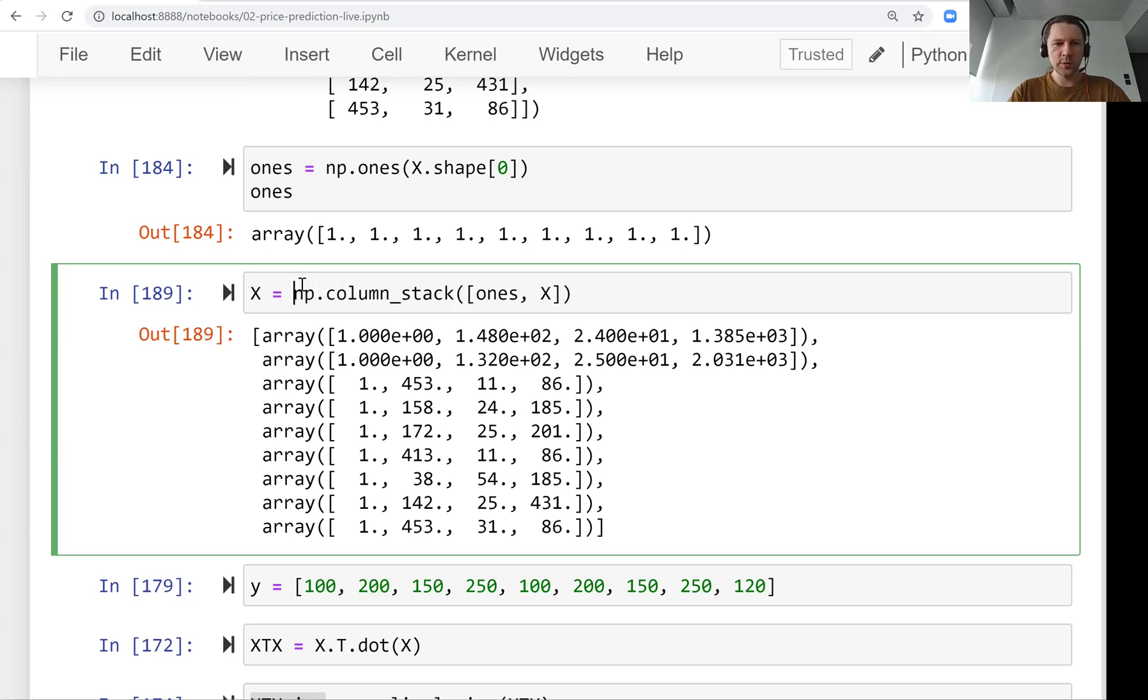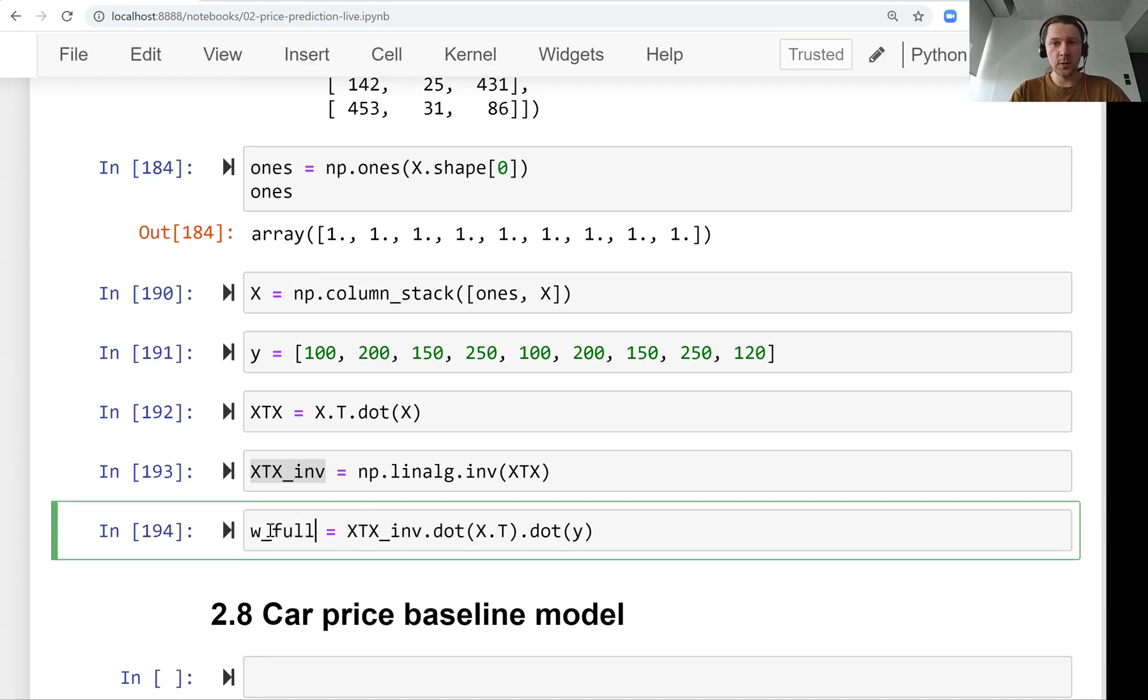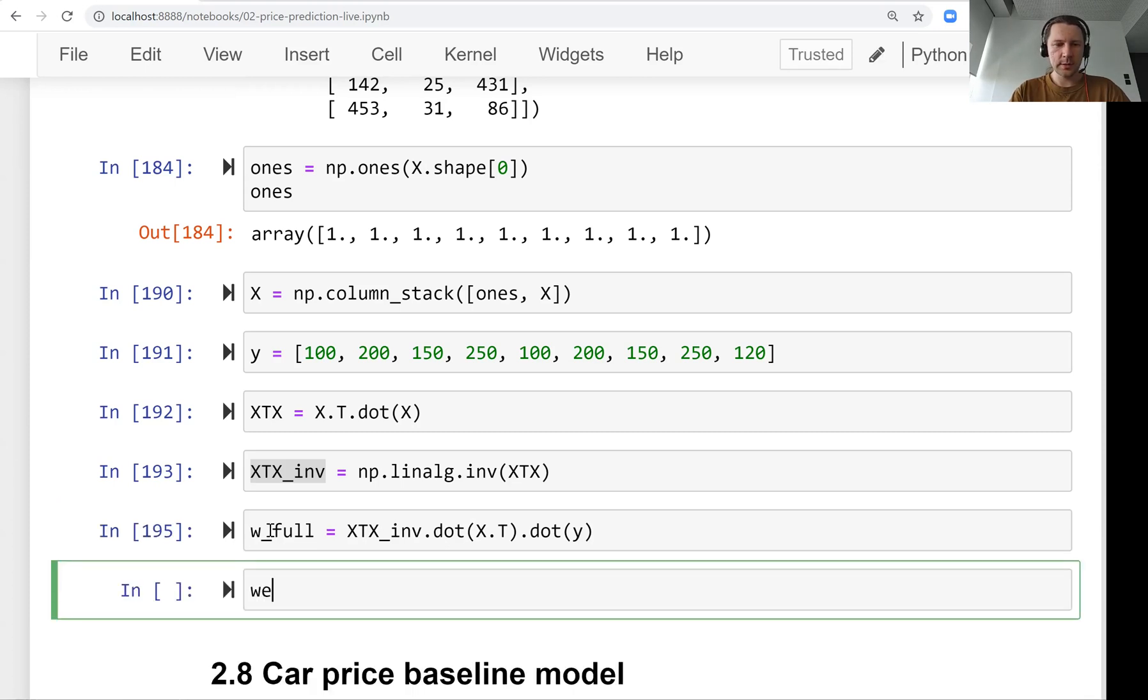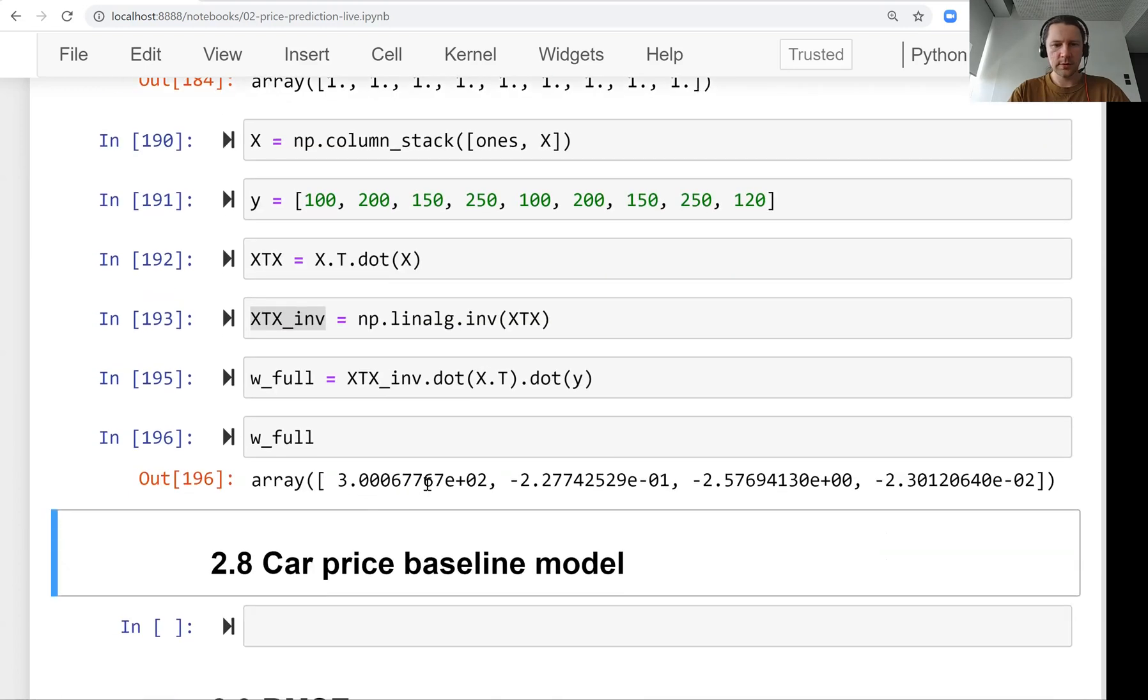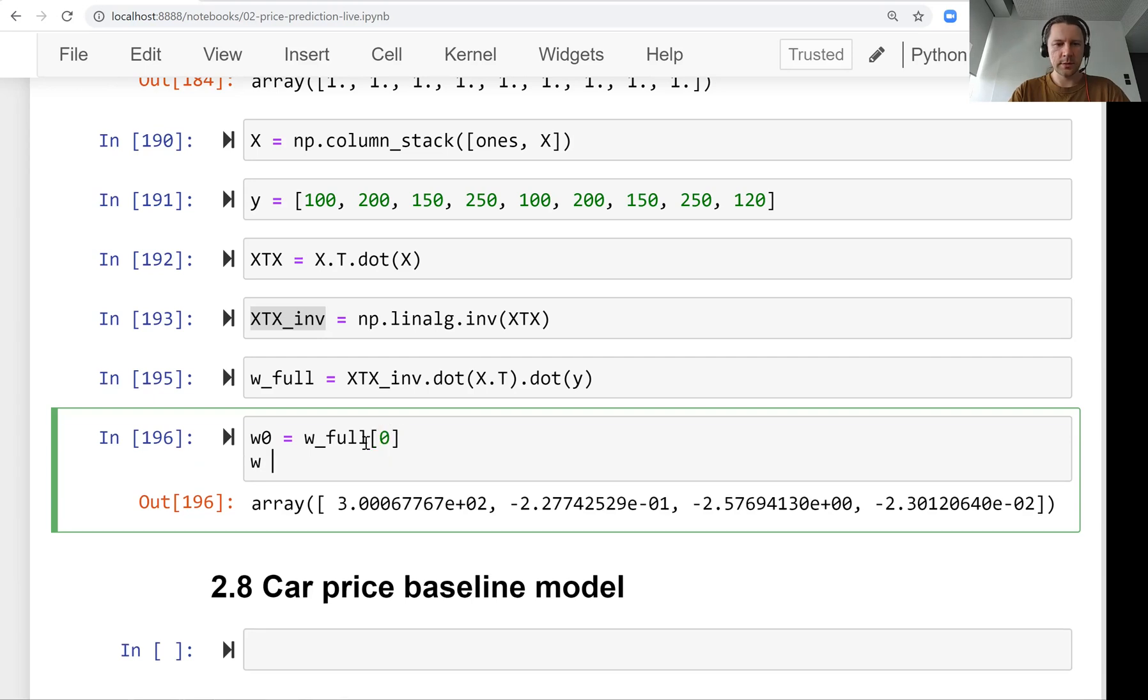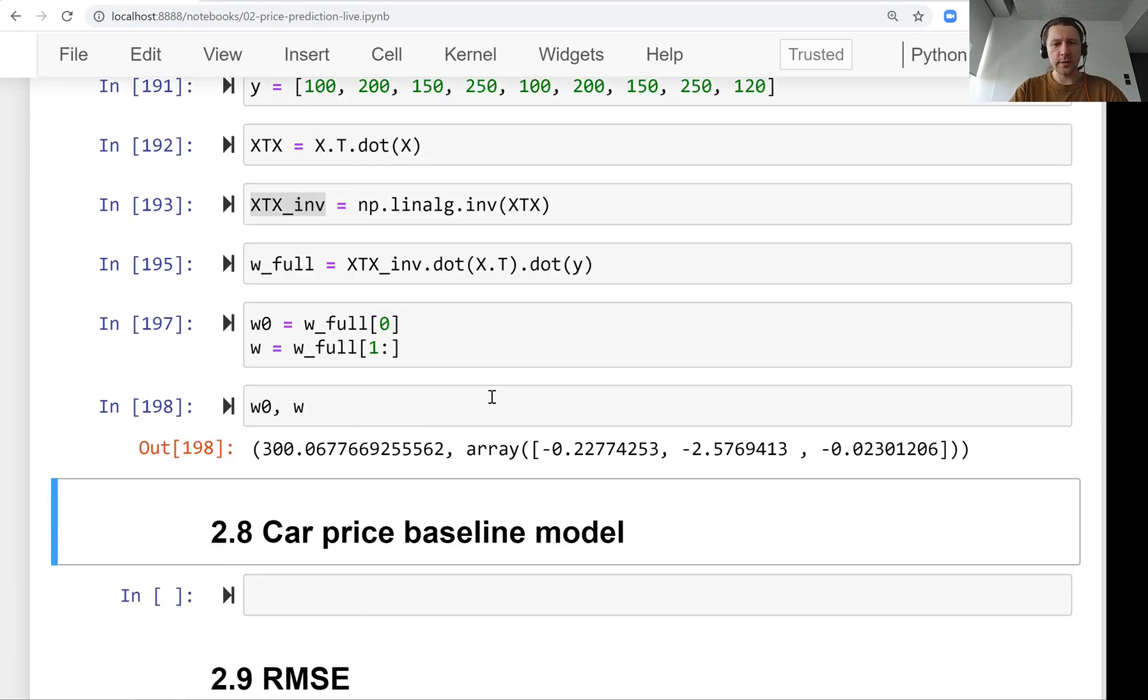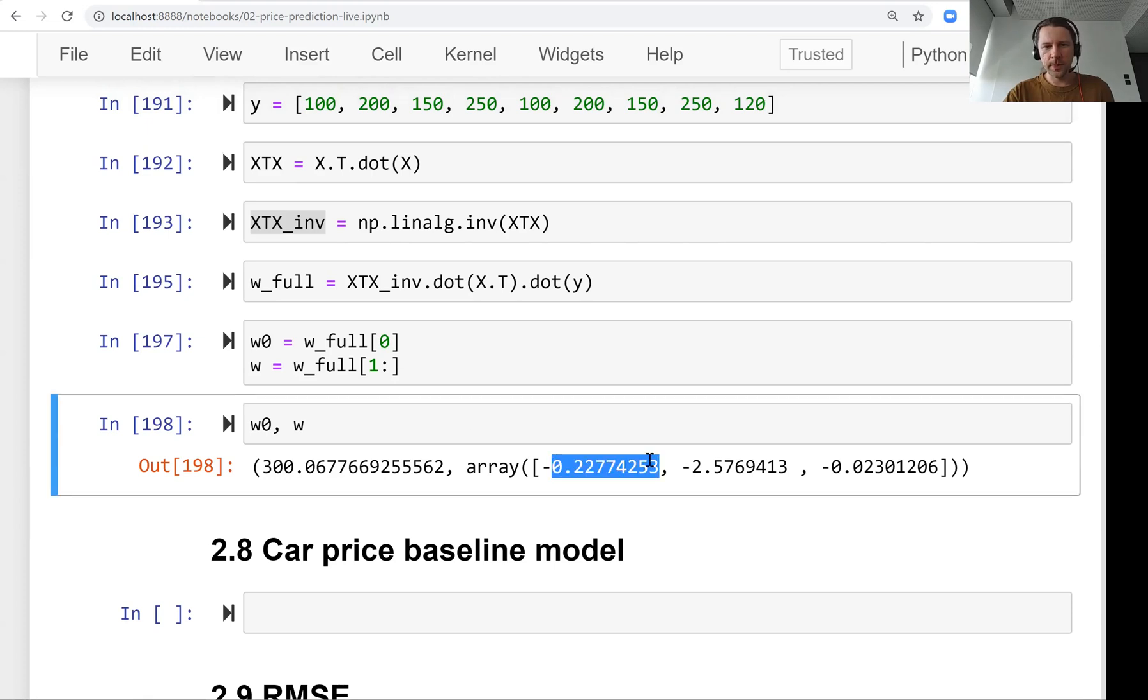So this is our x. Now we override it, and then we go through this same thing again. And let's call it w_full because it contains all the weights. Starting from the bias and then the rest. And we can decompose it. We can say that w0 is the first one. So this is the bias and the W, the rest. And this is the coefficients that we have for our linear regression. So this is the bias term and this is W1, W2 and W3. You see that they actually are negative.